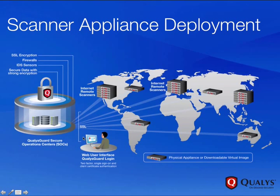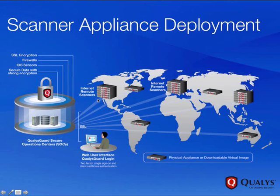Now, next we have our external scanners. We are going to use these external scanners to scan our externally facing IP addresses — meaning our publicly routable IP addresses. The great part about this setup is we won't have to install any equipment, nor will we have to download or maintain any software. Qualys can do all of that for us. As soon as we log into our account, we are ready to scan our externally facing IP addresses.